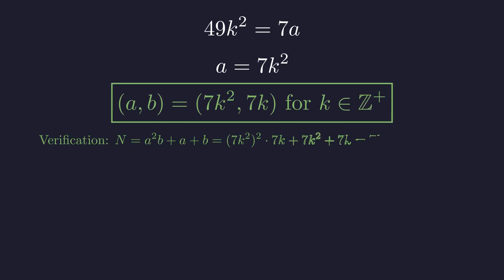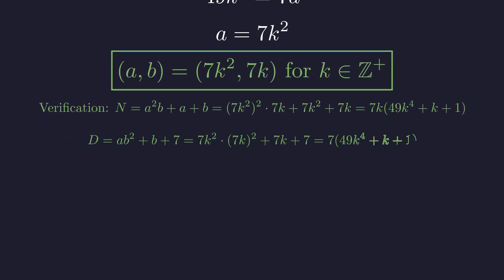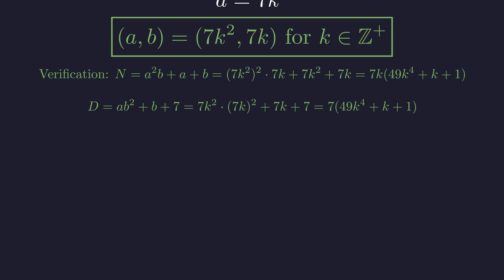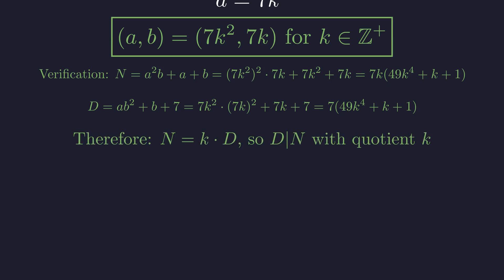We must verify that this family satisfies the original equation. Substituting a equals 7k squared and b equals 7k into n, we get 7k times the quantity 49k to the fourth plus k plus 1. Substituting into d, we get 7 times the same quantity. Thus n equals k times d, which confirms that d divides n for all positive integers k. This family of solutions is valid.